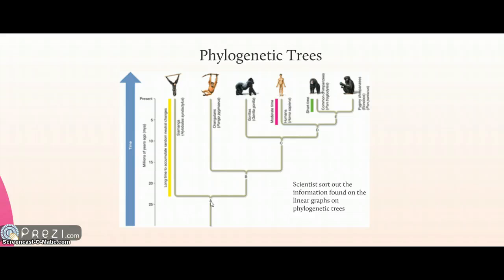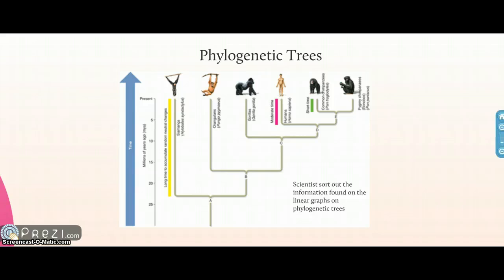Ancestor A diverged into two species, one of which was gibbons (shown on the tree here). Since it diverged about 23 million years ago, it will have more neutral mutations compared to the others. Therefore, if you looked at the genetic sequence for gibbons, it would be quite different. Whereas modern humans diverged from chimpanzees about 6 million years ago, so they will have fewer neutral mutations than gorillas, orangutans, and gibbons, and their genetic sequence will be more similar to both common chimpanzees and the other chimpanzee species.